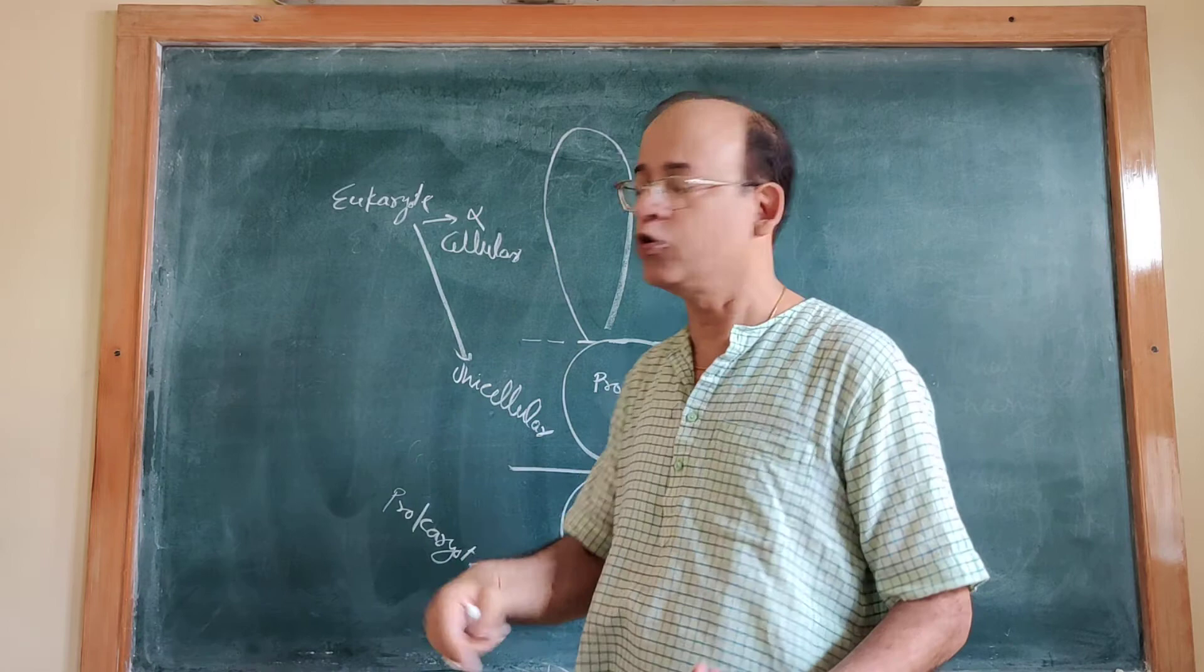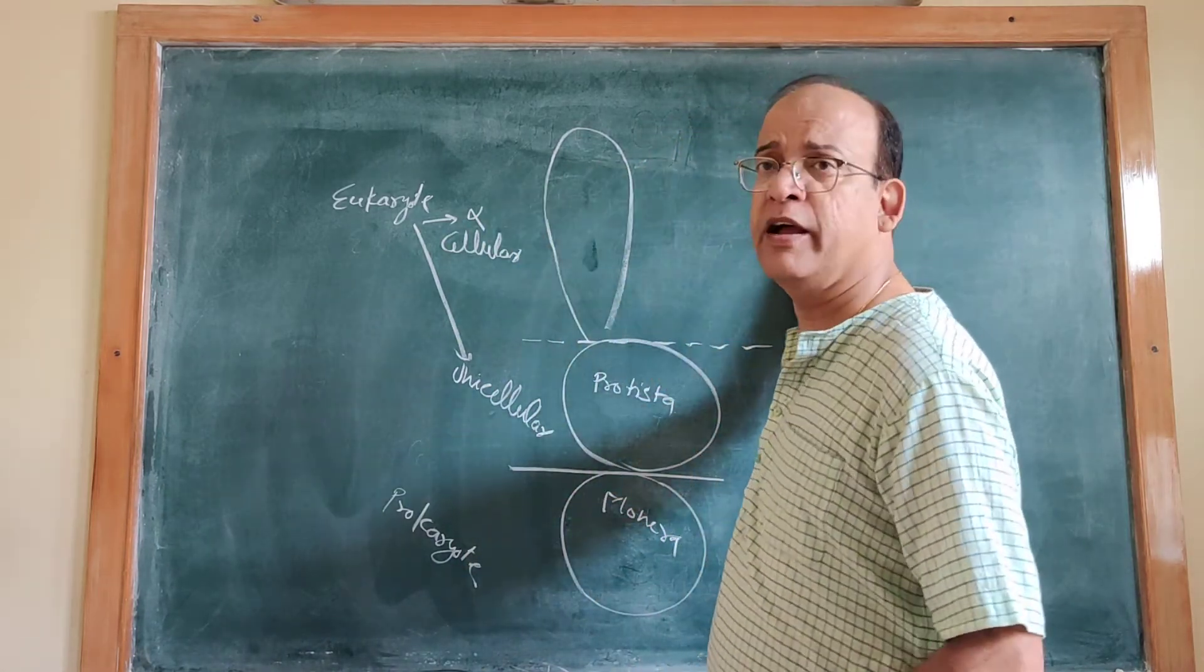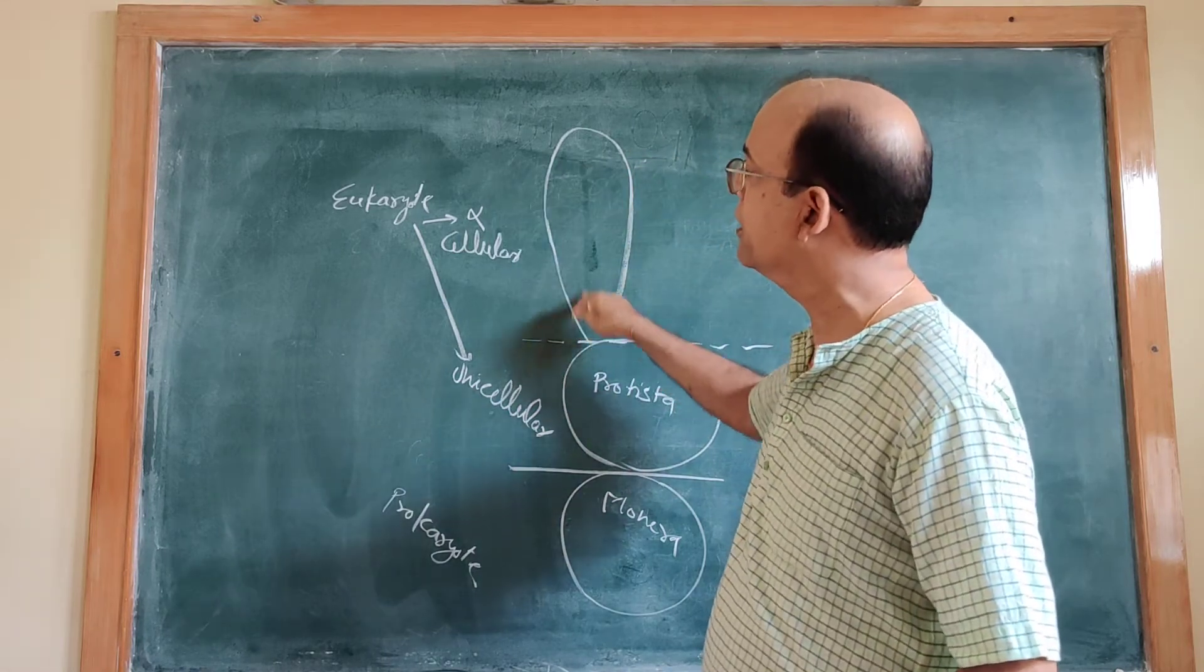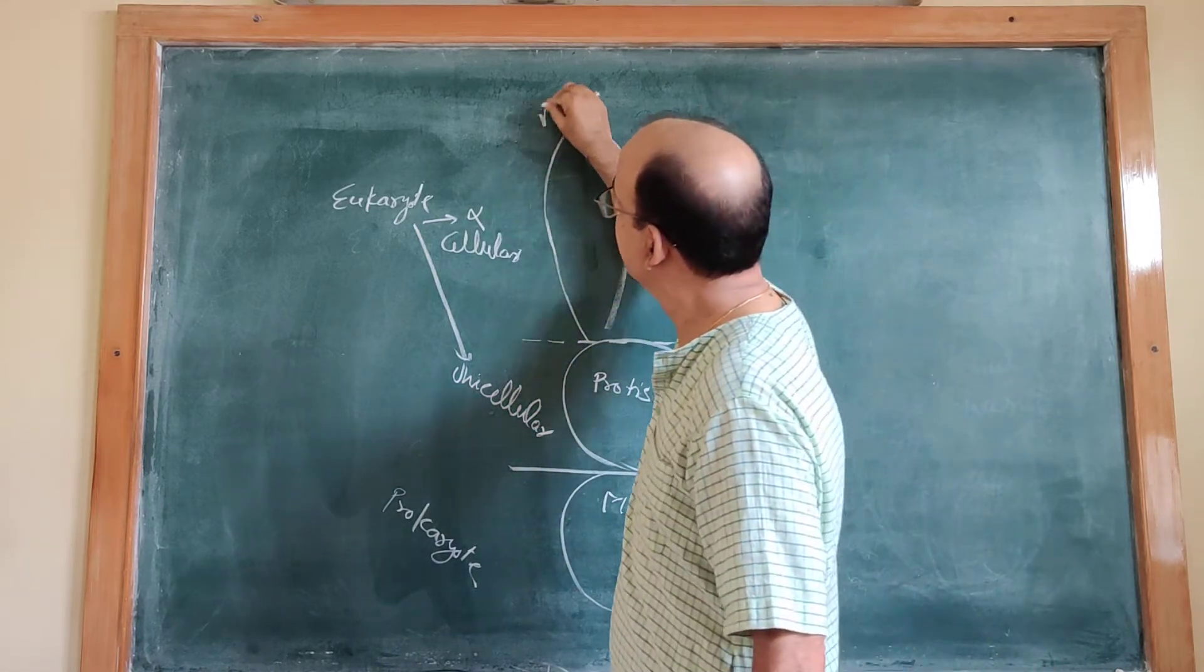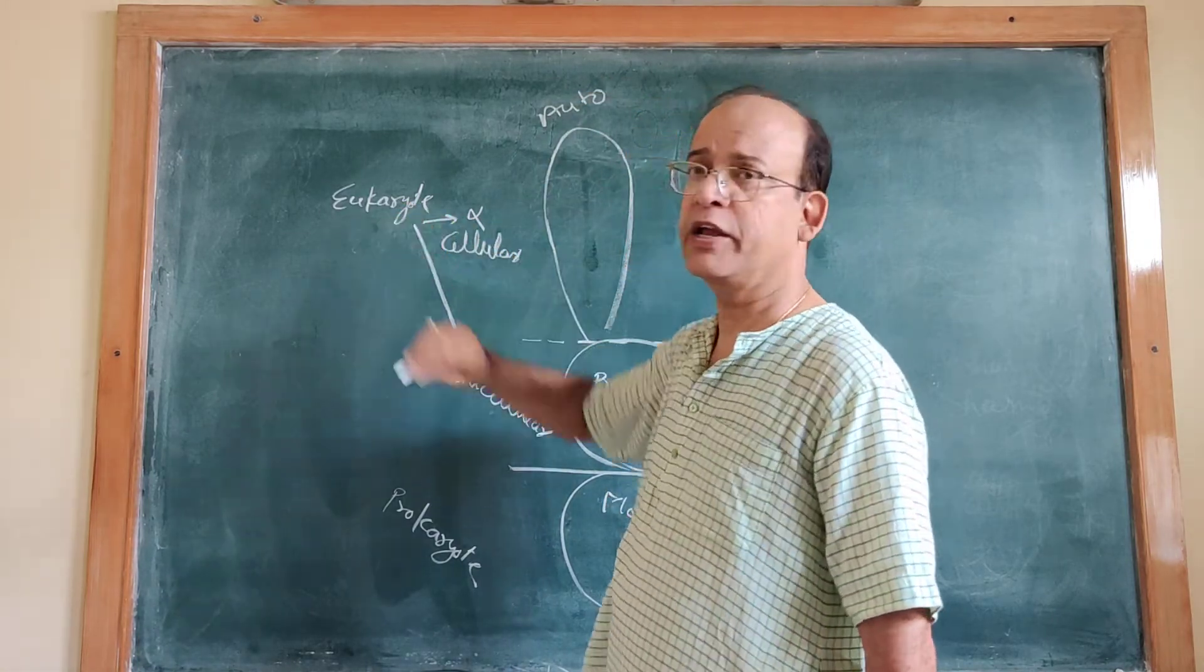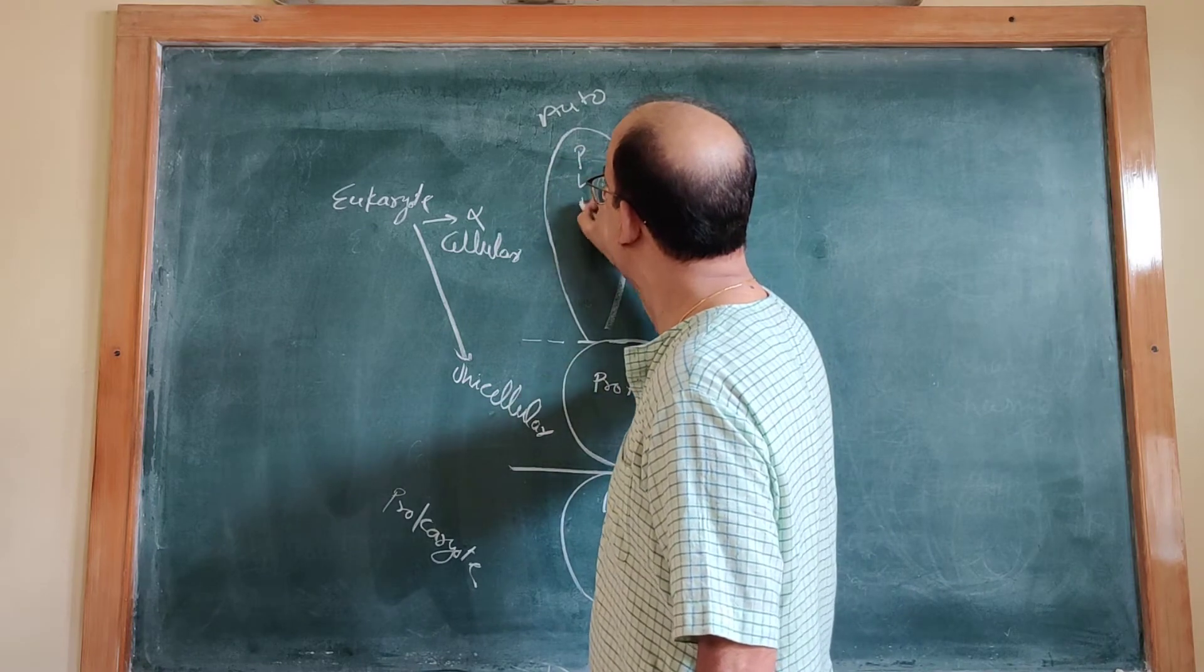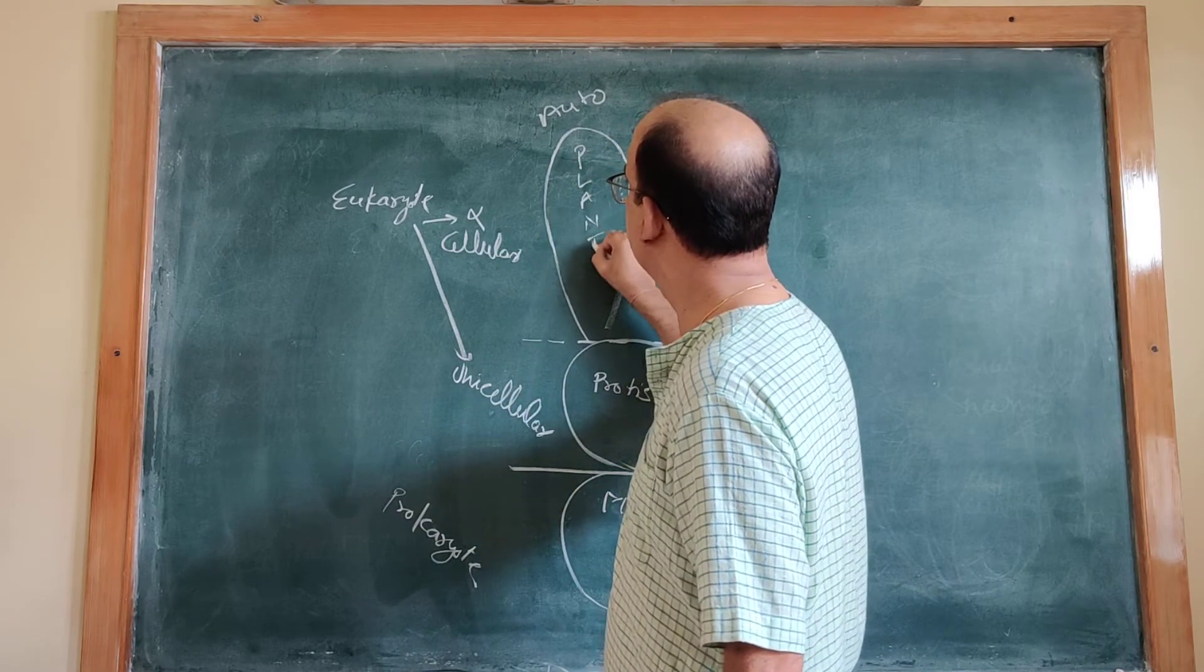This group of multicellular eukaryotes is called Kingdom Plantae.